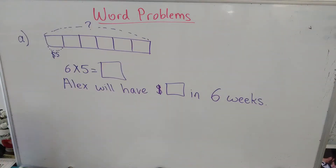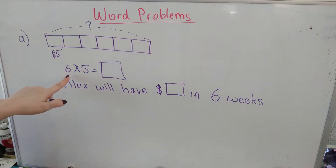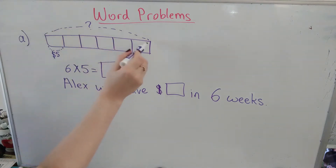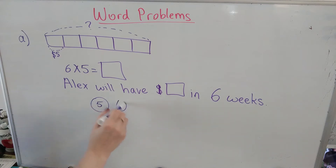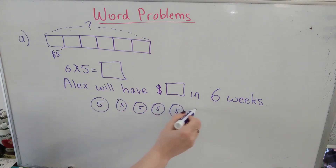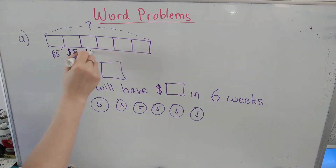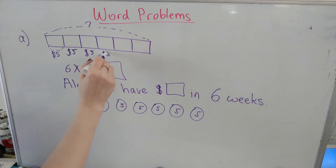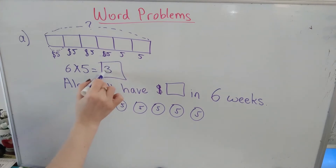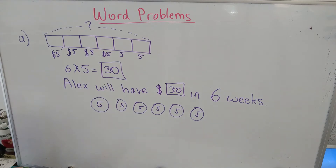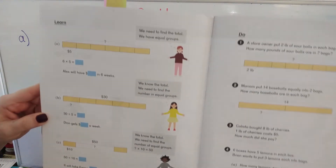Let's turn to the next page. On the next page they drew a picture for letter A — it is still the same problem. Alex gets $5 allowance each week, so they drew $5 for each of the six weeks: 1, 2, 3, 4, 5, 6. It's showing we are finding a total, essentially doing the same thing — multiplying 6 times 5. Each box has 5, so 5, 10, 15, 20, 25, 30. They reach the same answer: Alex will have $30 in 6 weeks. Go ahead and plug in your answers for letter A.